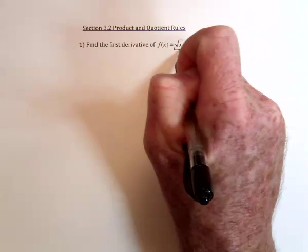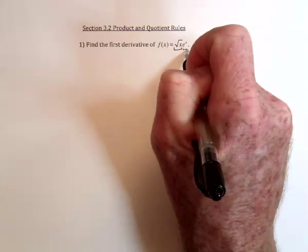So this is a product of two functions. They are the square root of x function and the e to the x function.